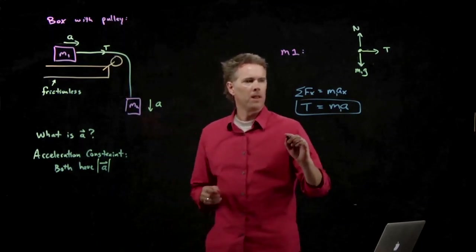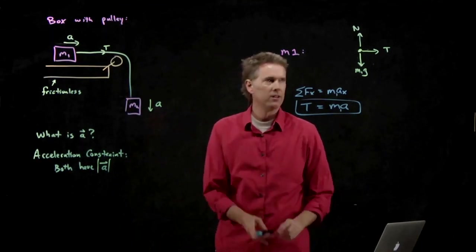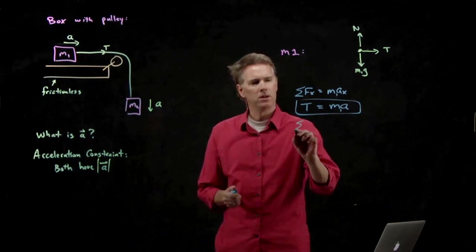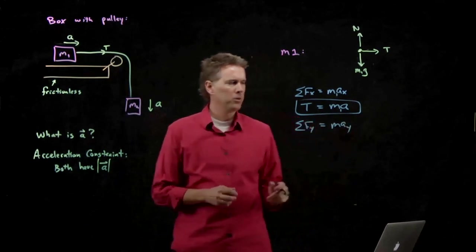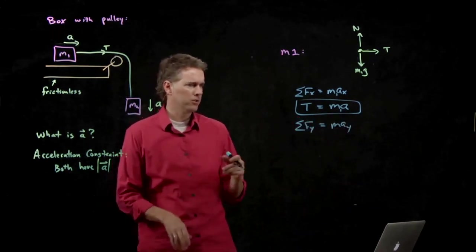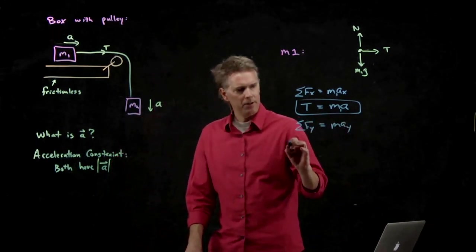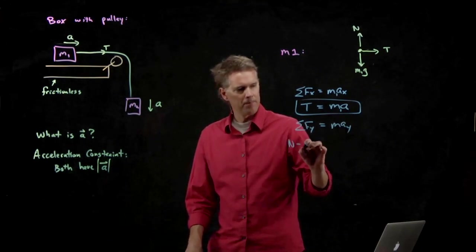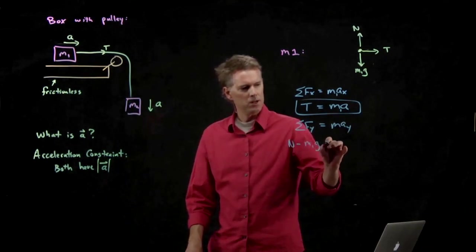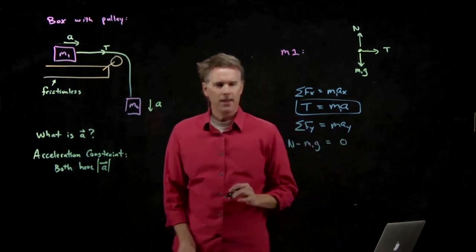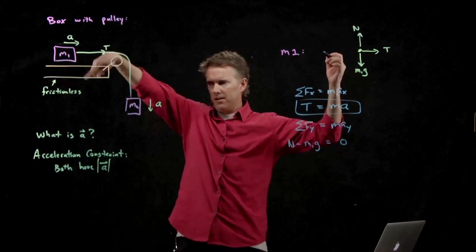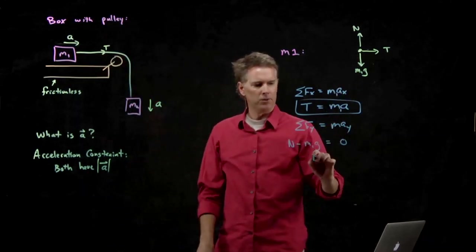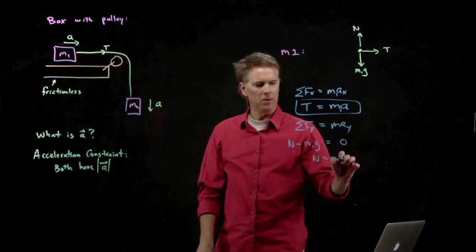What about the vertical components? Is that really going to help us here? Maybe not, but let's write it down anyway. Sum of the forces equals the mass times the acceleration in the vertical direction. This is normal force up, M1g down, and that equals zero, because that block is not accelerating up or down. And so we just get normal force equals M1g.